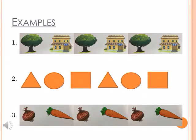Examples. 1. Tree house, tree house, tree house. 2. Triangle, circle, square. Triangle, circle, square.